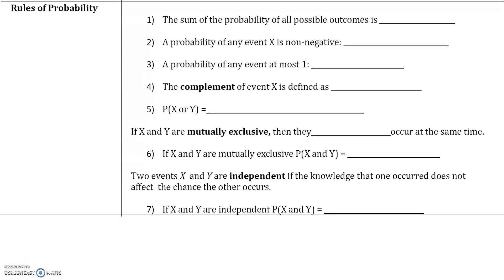Here are some rules of probability. The sum of the probability of all possible outcomes is one, or 100%. The probability of any event X is non-negative — it is always greater than or equal to zero. If the probability is zero, that means the event is impossible. The probability of any event is at most one; a probability of one means we are 100% sure that event will happen, and we can't have a probability greater than one.